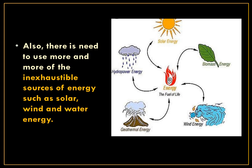Also, there is a need to use more and more inexhaustible resources of energy such as solar, wind and water energy. To preserve exhaustible resources, we have to use more inexhaustible resources. Solar energy will not get finished. Water energy and wind energy will not finish either. Other examples include geothermal energy and biomass energy. These are natural renewable resources. We have to use these renewable or inexhaustible resources more and more to preserve exhaustible resources.